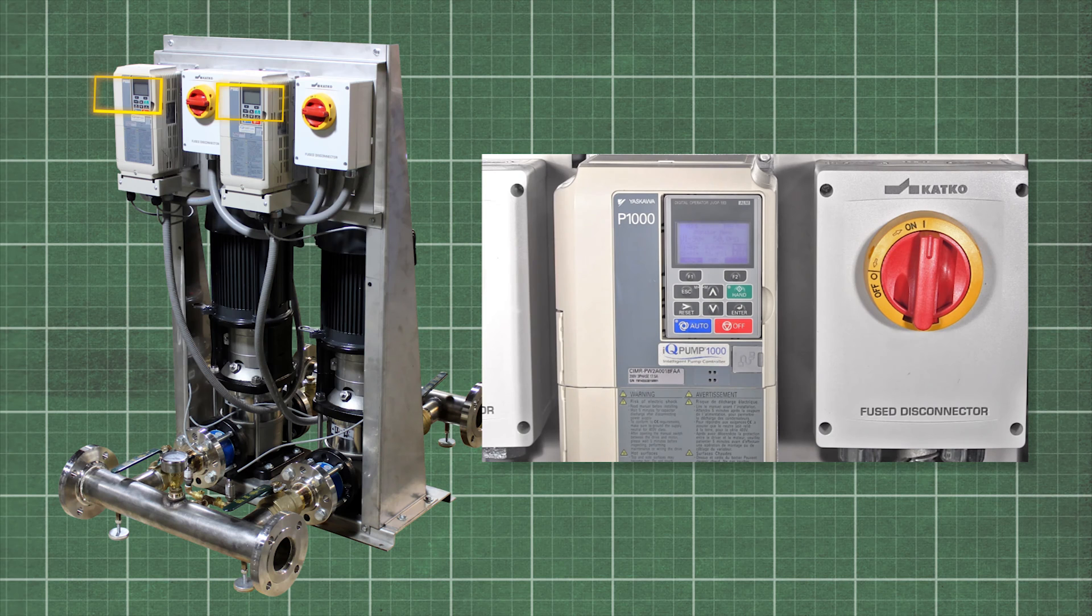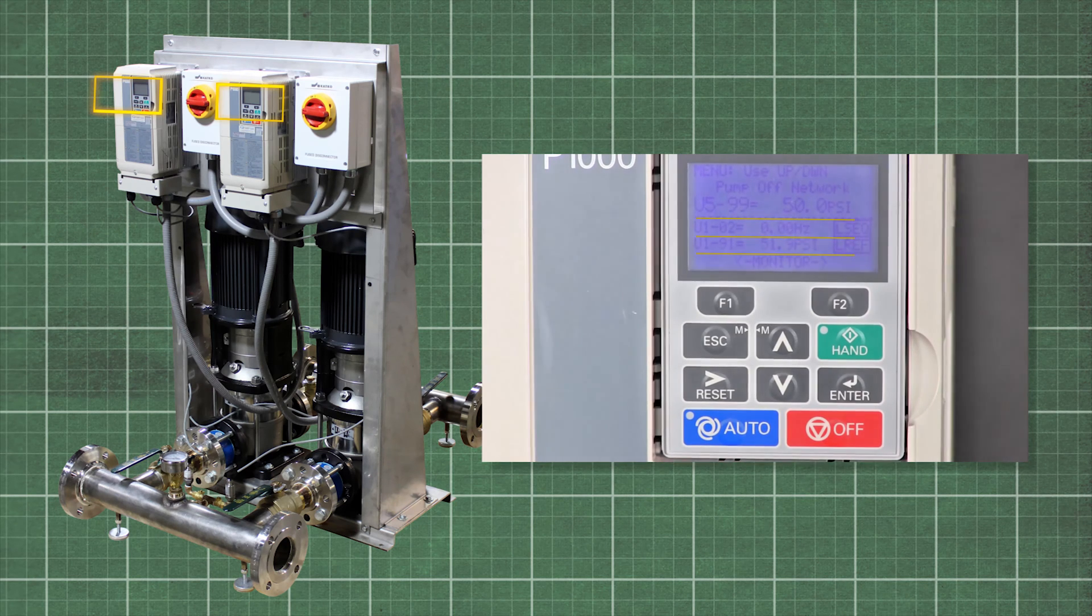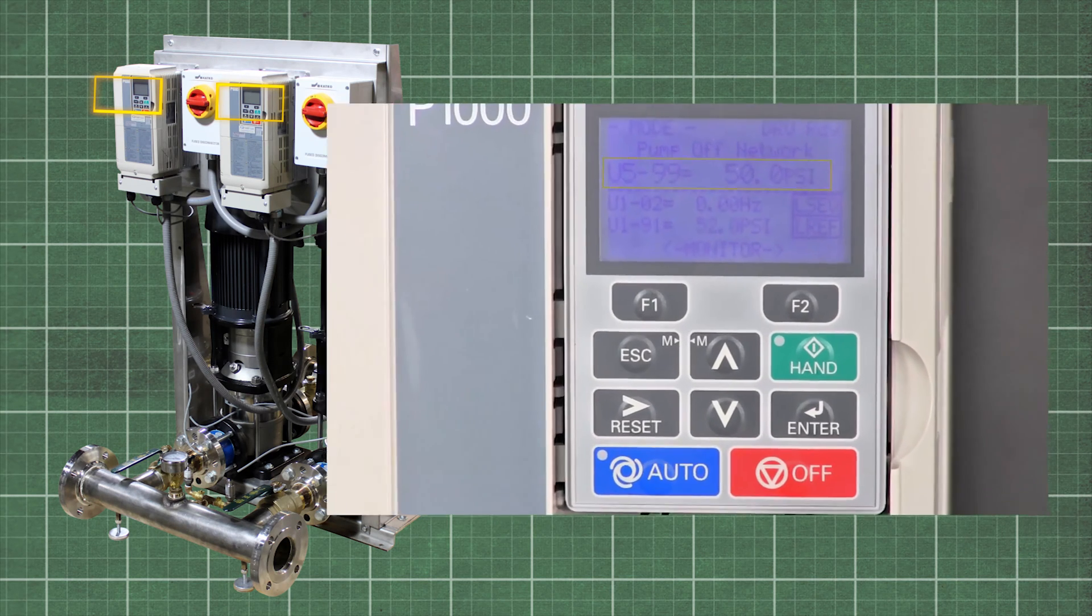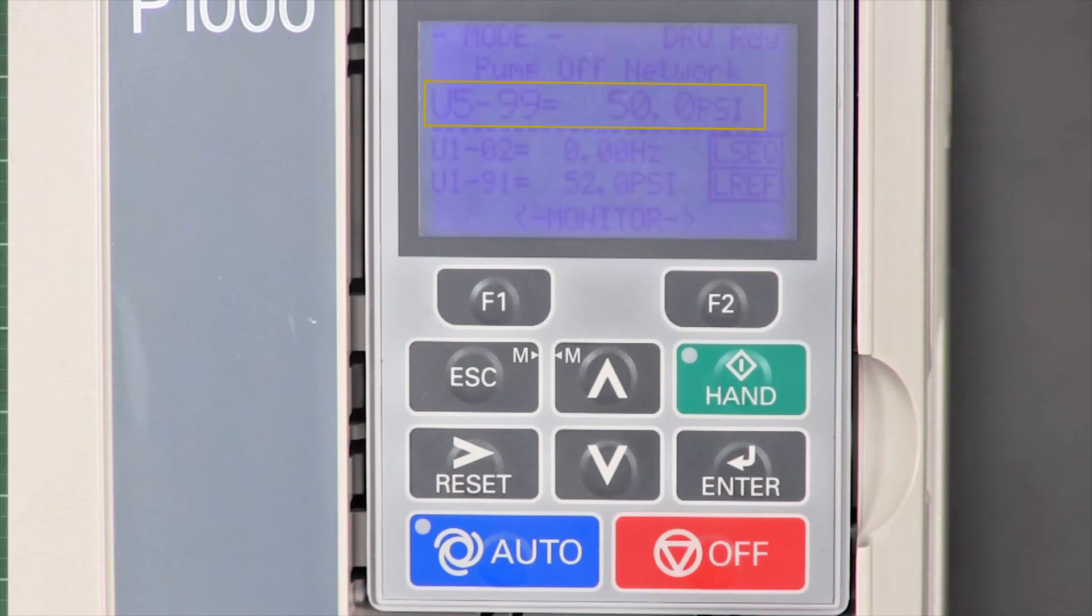If you don't see the screen, press escape. Here you can see three monitor lines on the display. The U599 pressure set point, this is the pressure the pump will try to maintain.